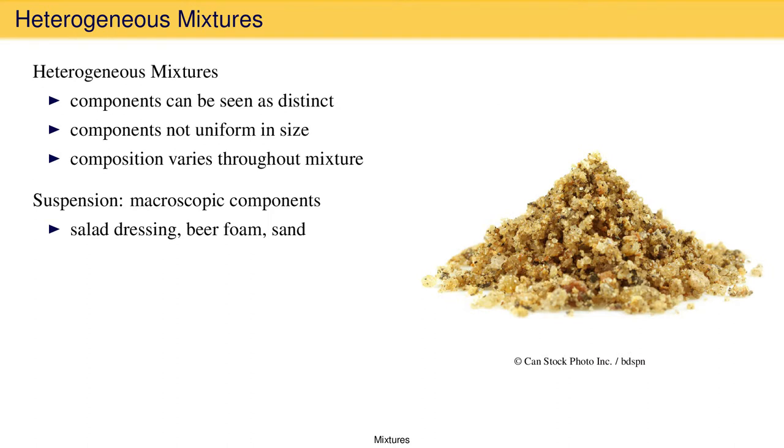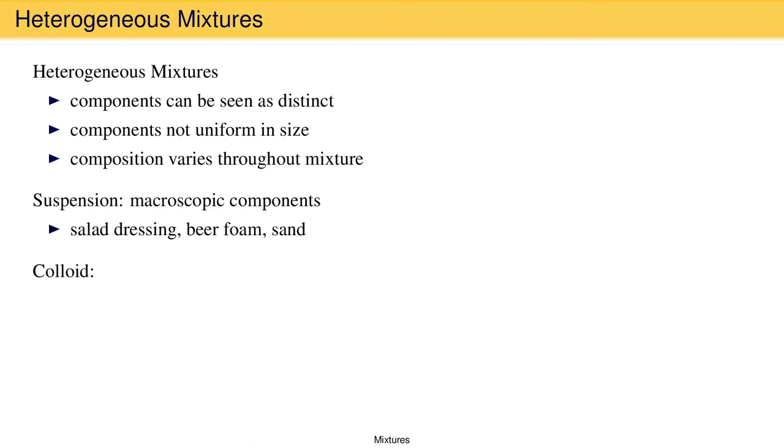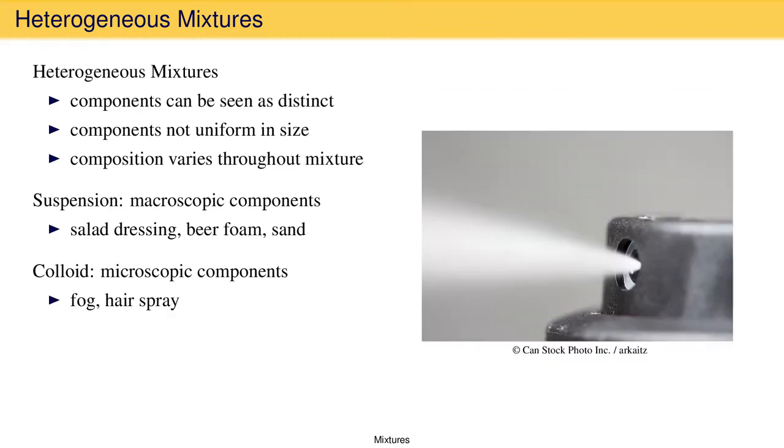If the components are not large enough to see with the human eye and can only be distinguished with magnification, a heterogeneous mixture is called a colloid. Because the components can be seen only with the aid of a magnifying device, we call the components microscopic. Examples include liquids dispersed in gases, as in fog and hairspray.